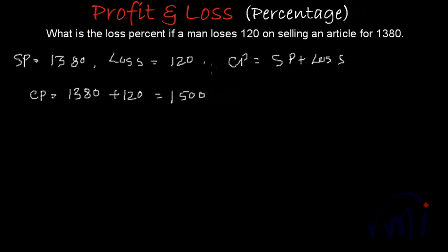He is earning a loss of 120 over this 1,500. So loss percent will actually be equal to 120 out of 1,500 multiplied by 100. These two zeros will cancel these two zeros. 15 ones are 15, 15 eights are 120. So loss percent is actually 8% over here.